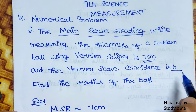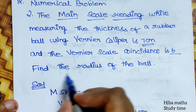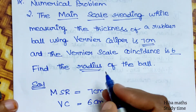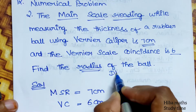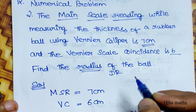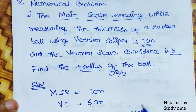Vernier scale coincidence is 6. Find the radius. The radius is the diameter divided by 2.